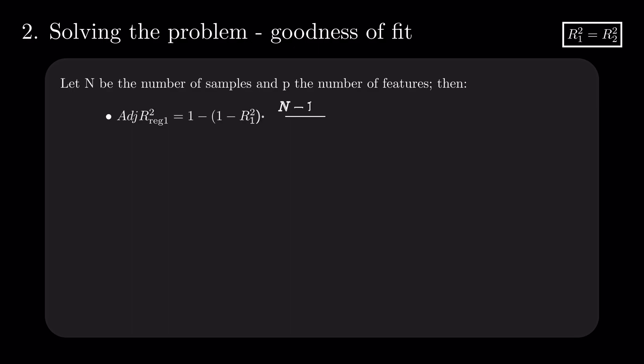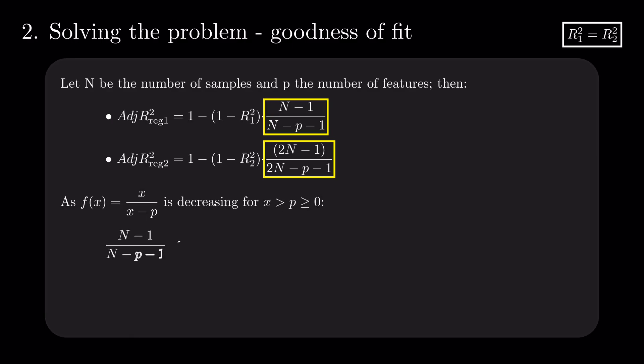Since the formula uses the degrees of freedom, the value of the adjusted r-squared might change due to data duplication. The adjustment coefficient for the second regression increases, resulting in a larger adjusted r-squared.